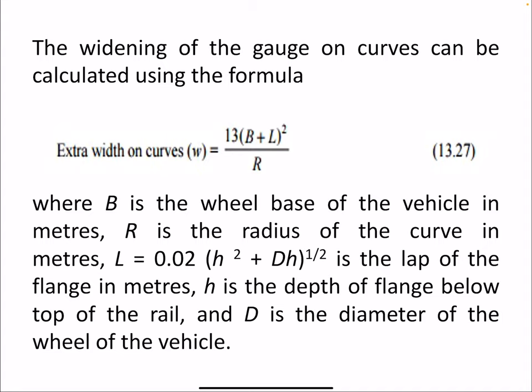The widening of gauge on curves can be calculated using the formula: extra width = 13 × (B + l)² / R, where B is the wheelbase of the vehicle in meters, R is the radius of the curve in meters, and l is the lap of the flange in meters, calculated as 0.02 × (h² + dh)^(1/2), where h is the depth of the flange below the top of the rail and d is the diameter of the wheel.